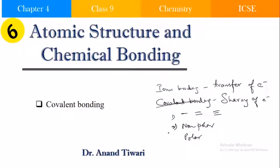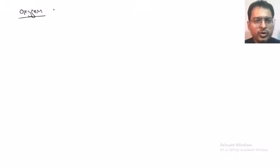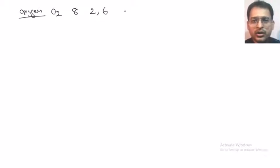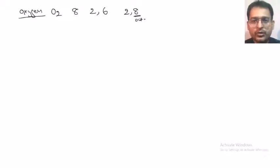We will continue from where we left in the previous lecture. Oxygen — the O2 molecule. The atomic number is 8, the electronic configuration is 2,6, and it wants to reach the electronic configuration of 2,8 to be stable according to the octet rule. So it needs two more electrons.